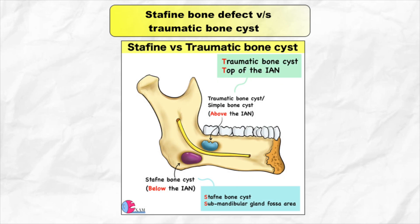Next is Stafne bone defect and traumatic bone cyst position. You can remember with this image and mnemonics: traumatic bone cyst is seen above the inferior alveolar nerve canal, and Stafne bone cyst is seen below the inferior alveolar nerve canal. T for traumatic and T for top. You can also remember Stafne bone cyst is in the submandibular gland fossa area — S for Stafne and S for submandibular gland fossa.